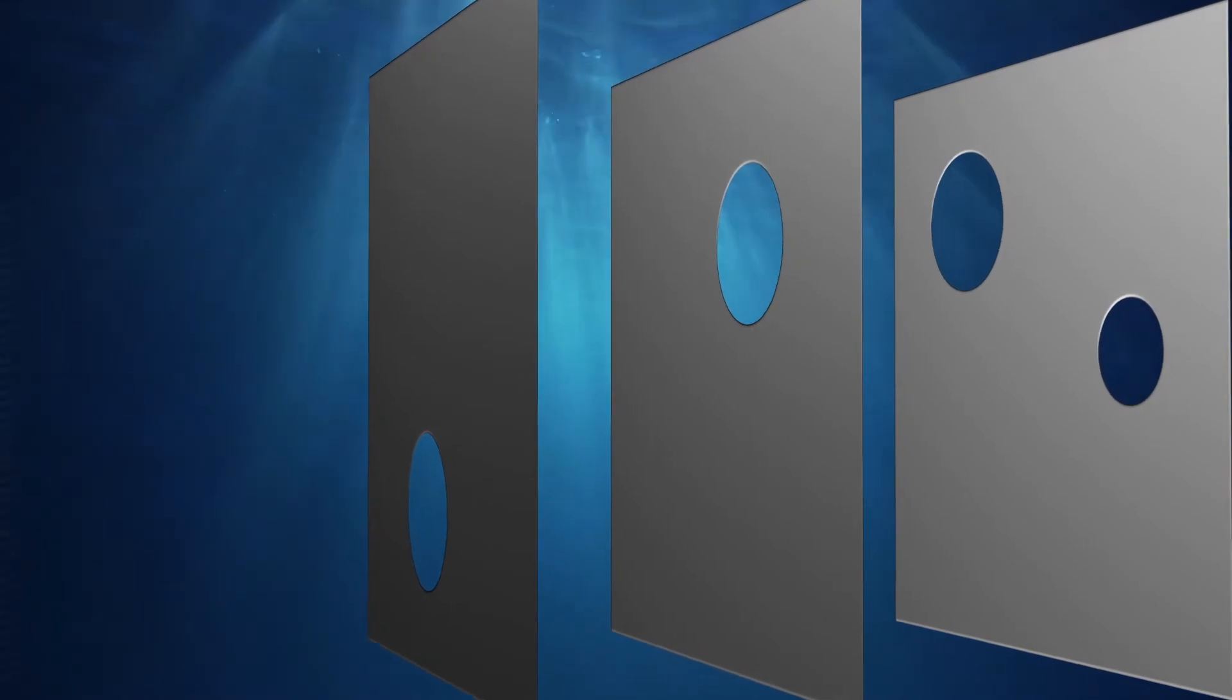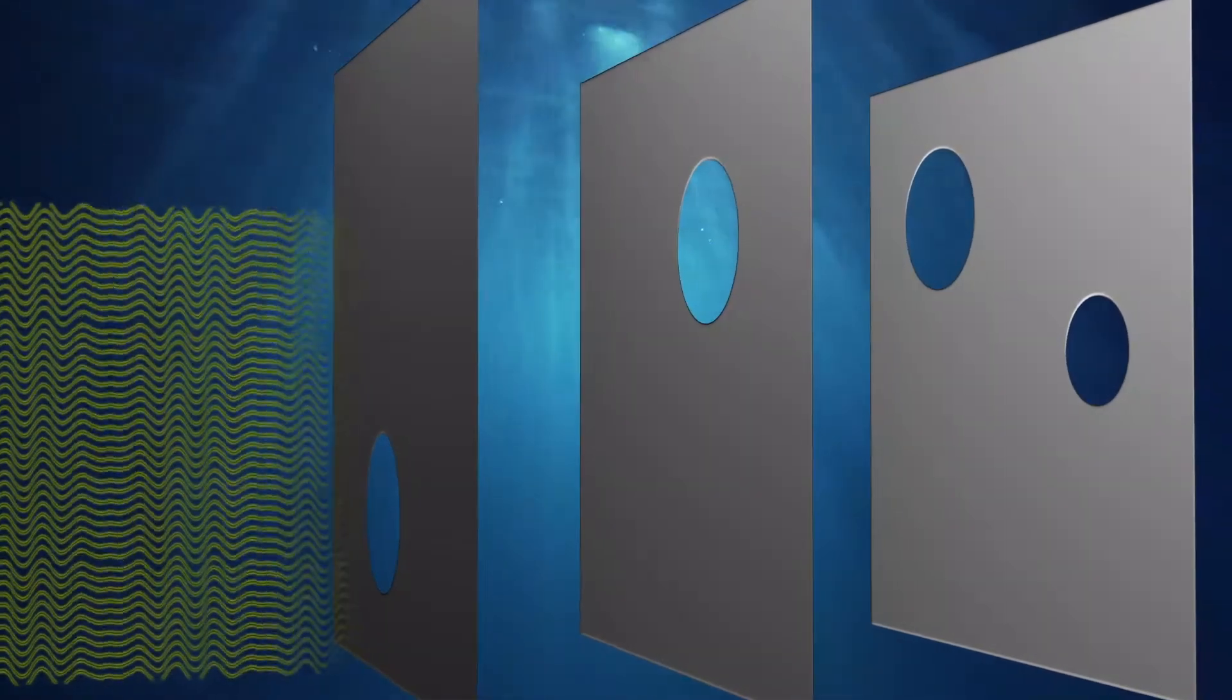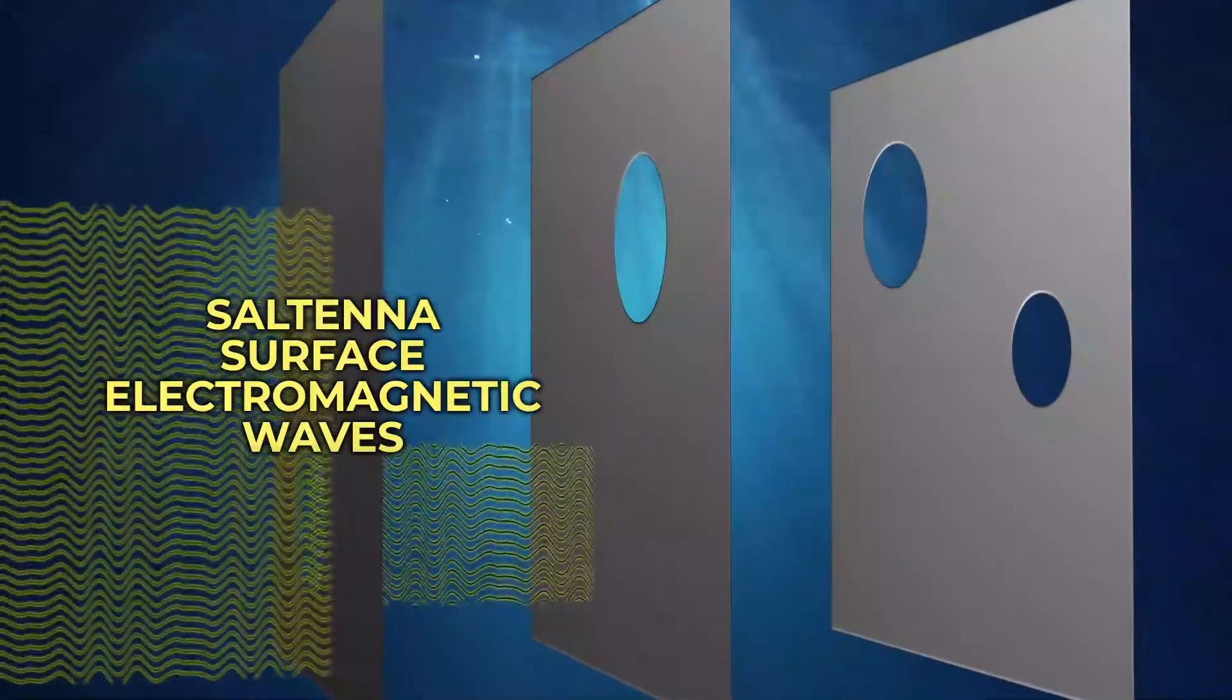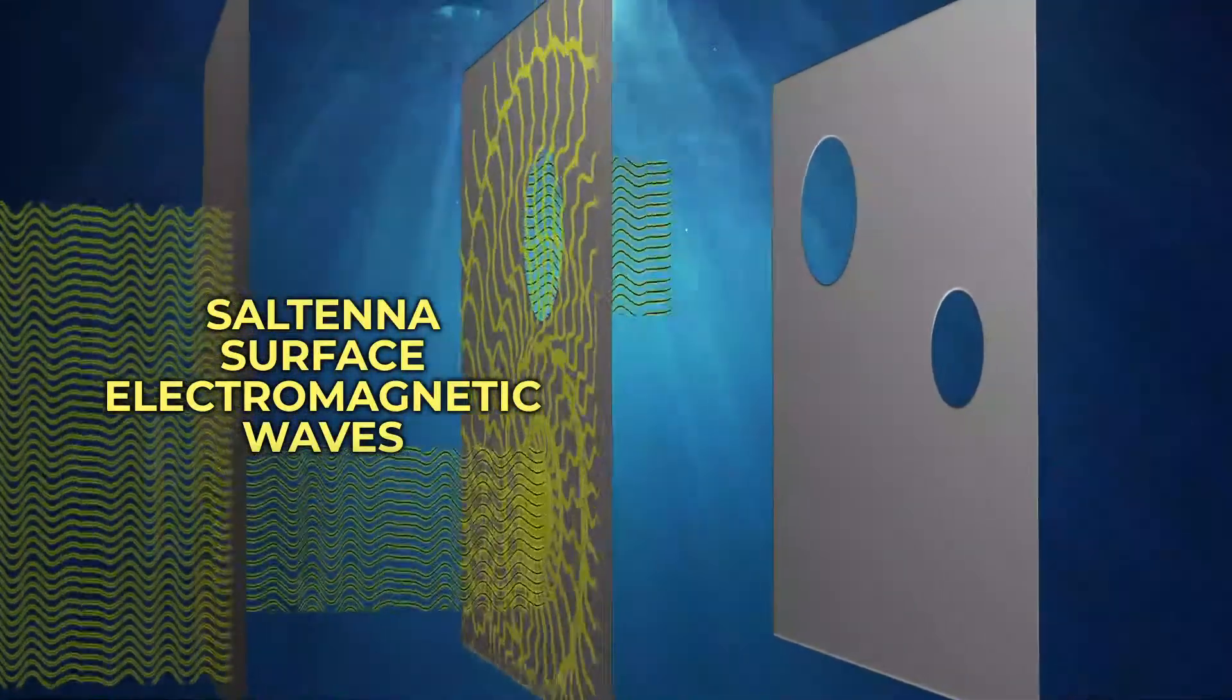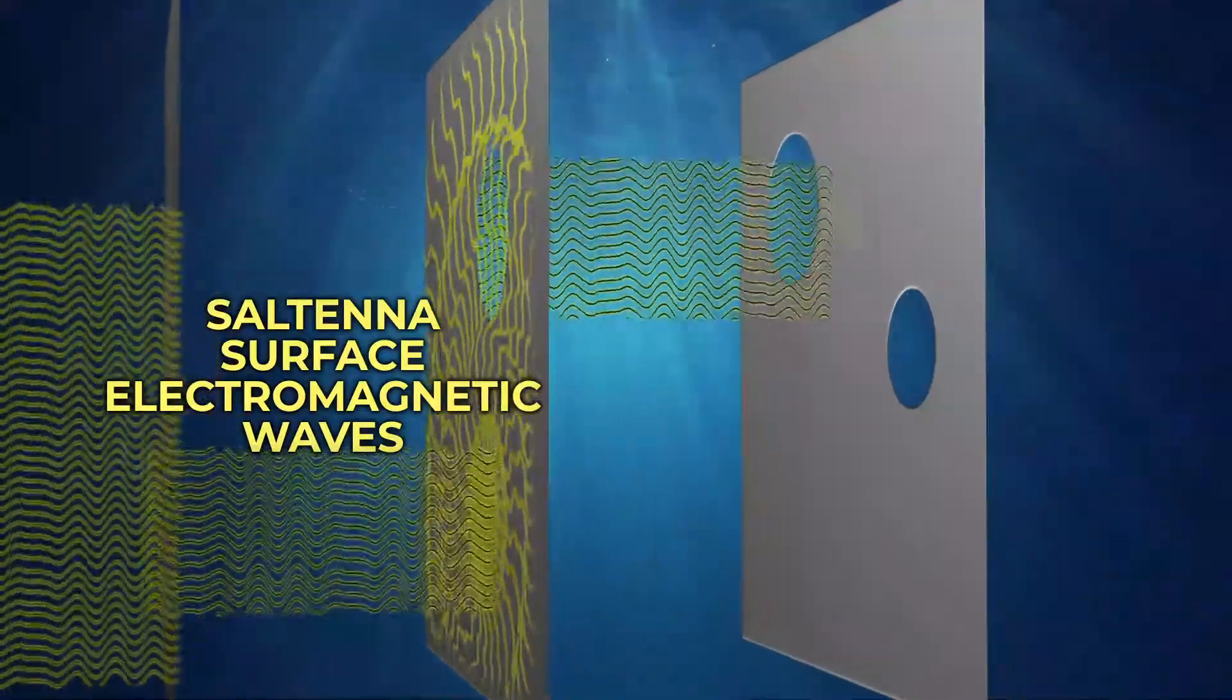Here, conversely to before, the yellow waves represent Saltena patented surface electromagnetic waves. Saltena waves transmit differently through and across boundaries those other waves cannot.